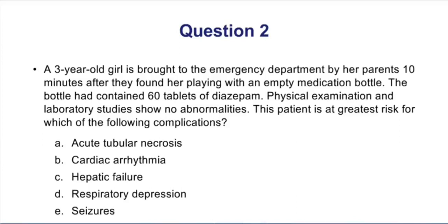We're trying to figure out how an overdose of a benzodiazepine will manifest. Since benzos are GABA drugs and GABA is a CNS-depressing neurotransmitter, the CNS-depressant effect manifests as choice D: respiratory depression. If you were thinking hepatic failure, diazepam is metabolized by the liver, but it doesn't cause liver damage or form toxic metabolites. Seizures are actually prevented by benzos; abrupt discontinuation is what may cause a seizure.